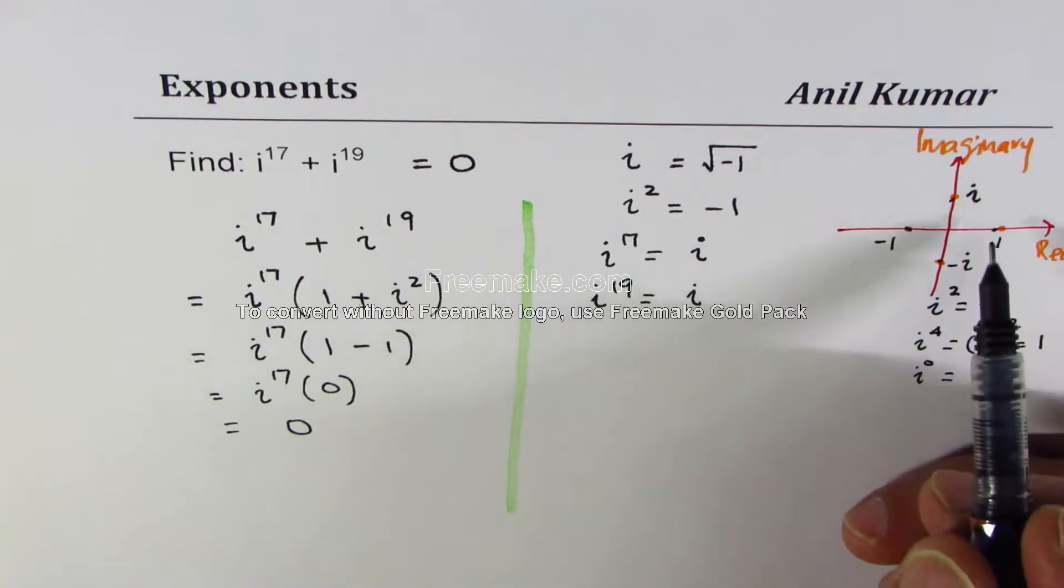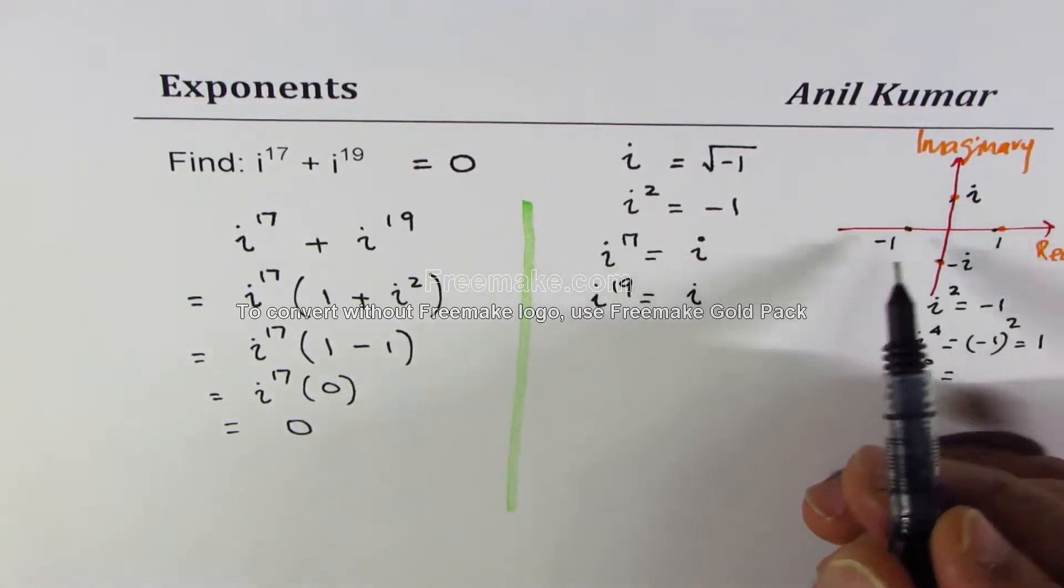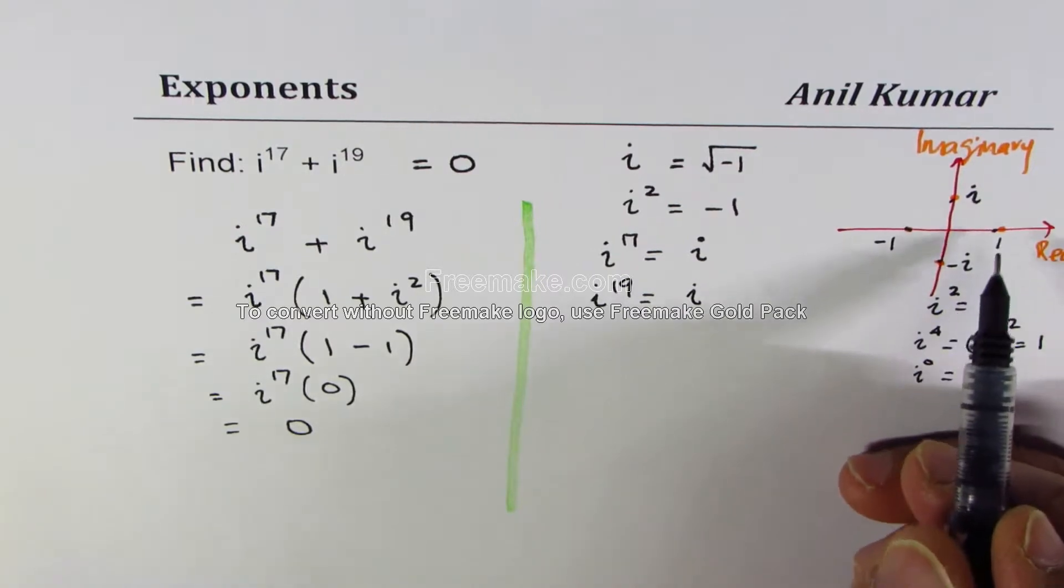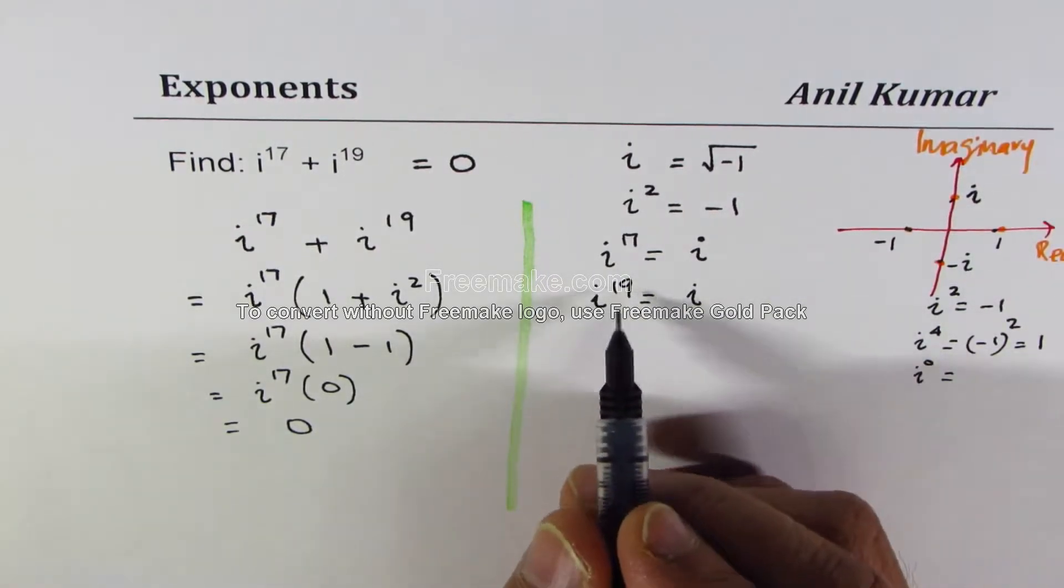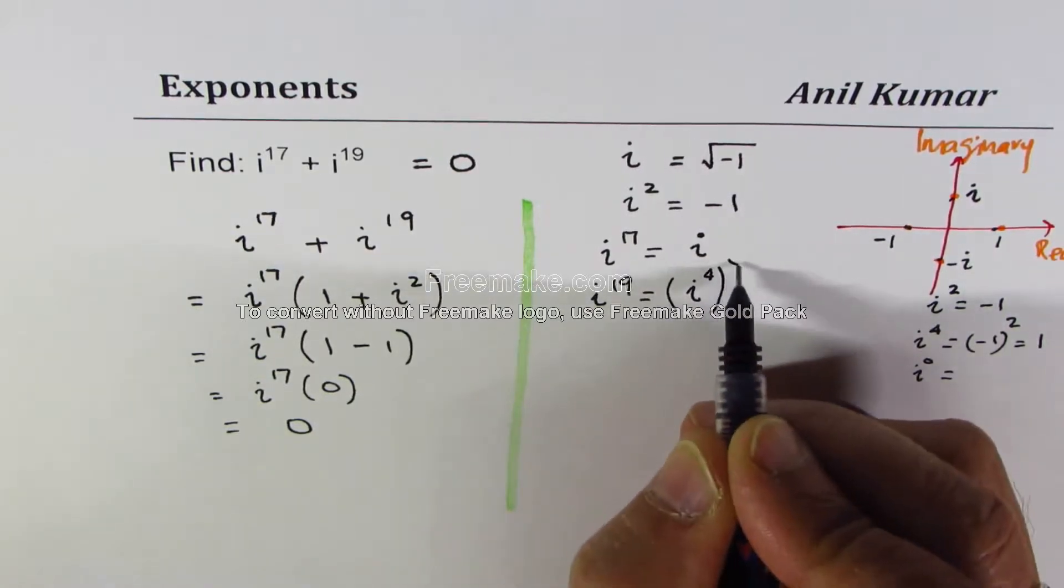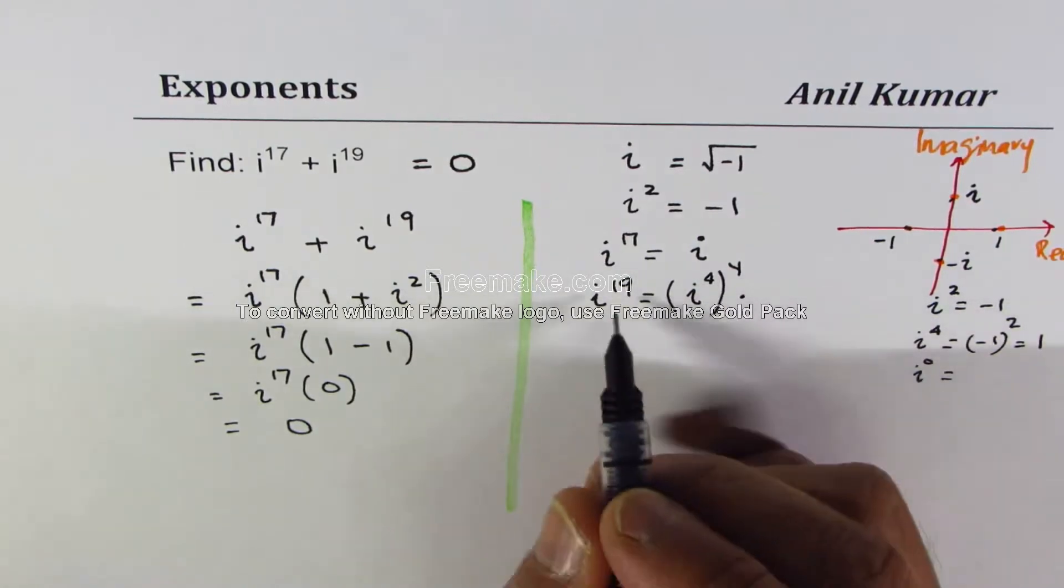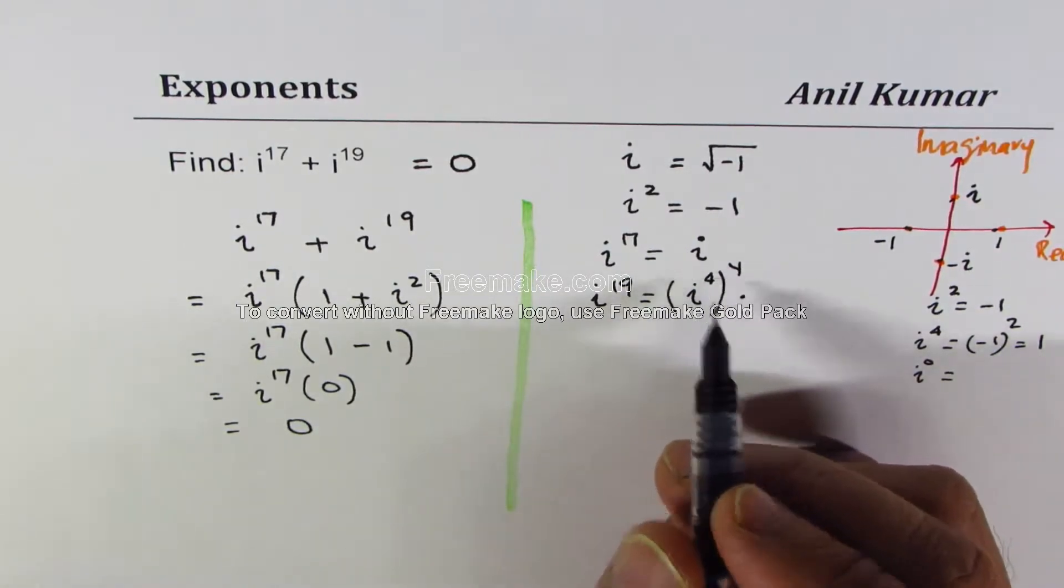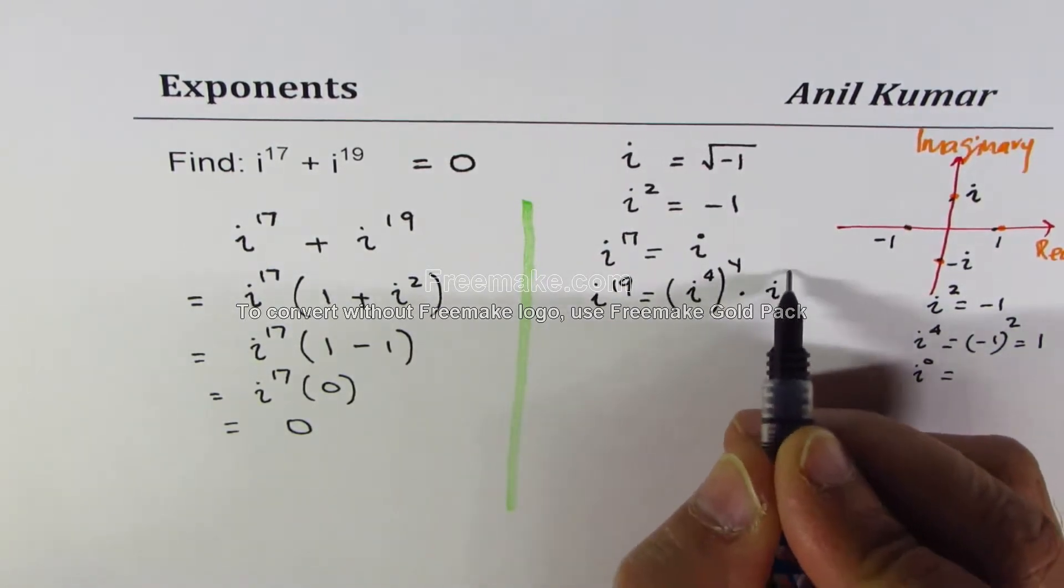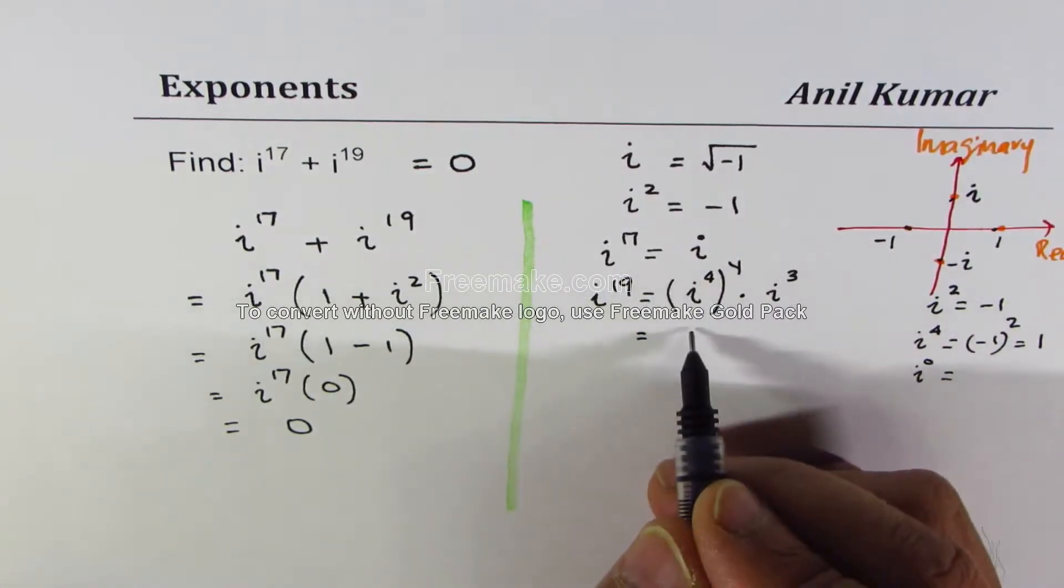So you'll notice that the values of i to any power will be either 1, i, minus 1, or minus i. We could write 19 as 16 which is 4 to the power of 4, which is 16 times i cube.